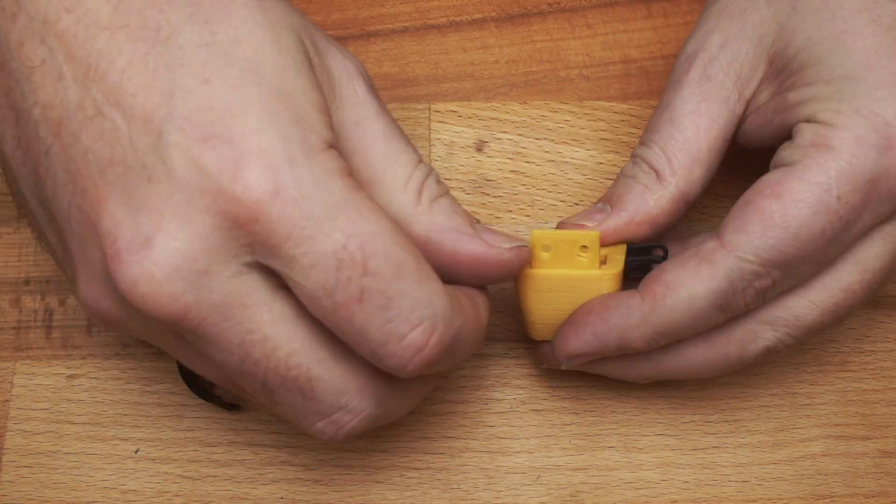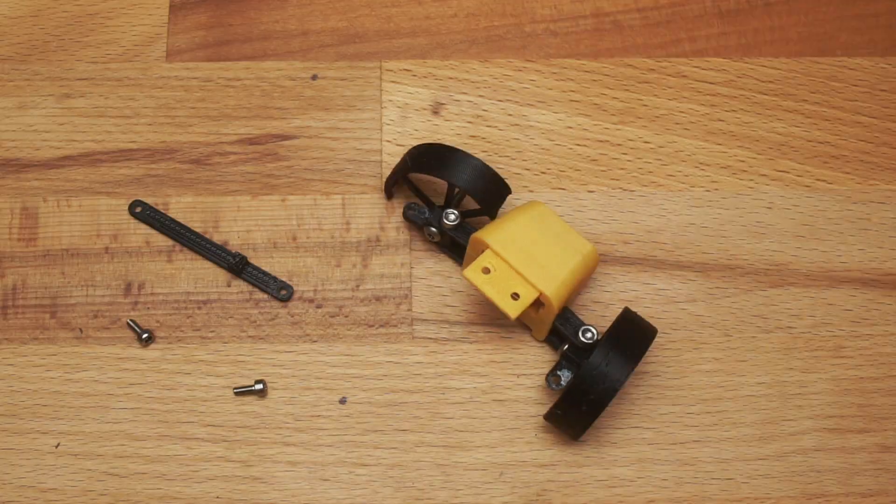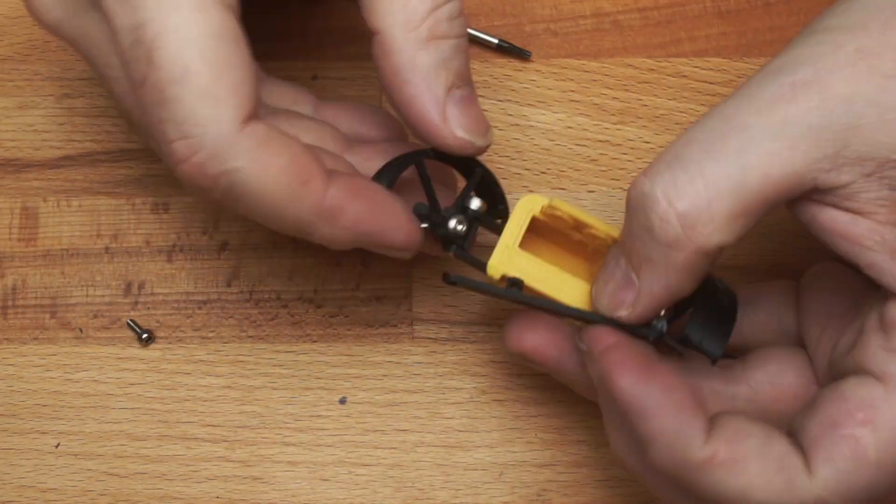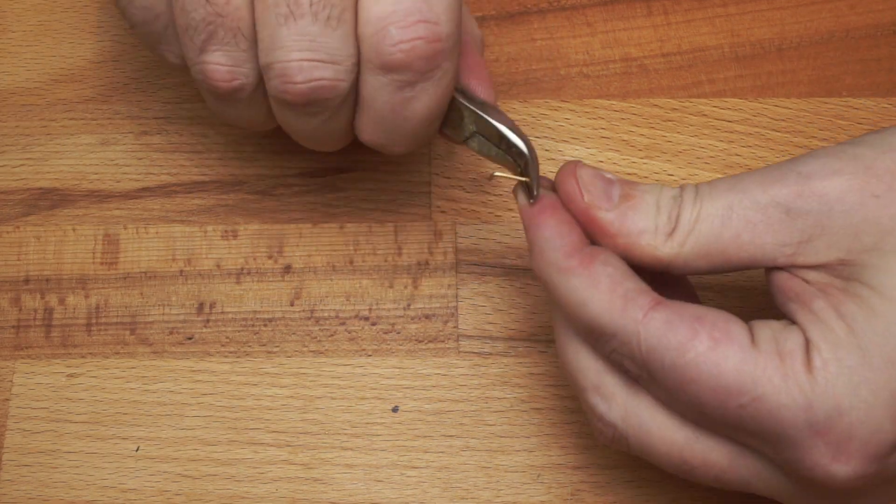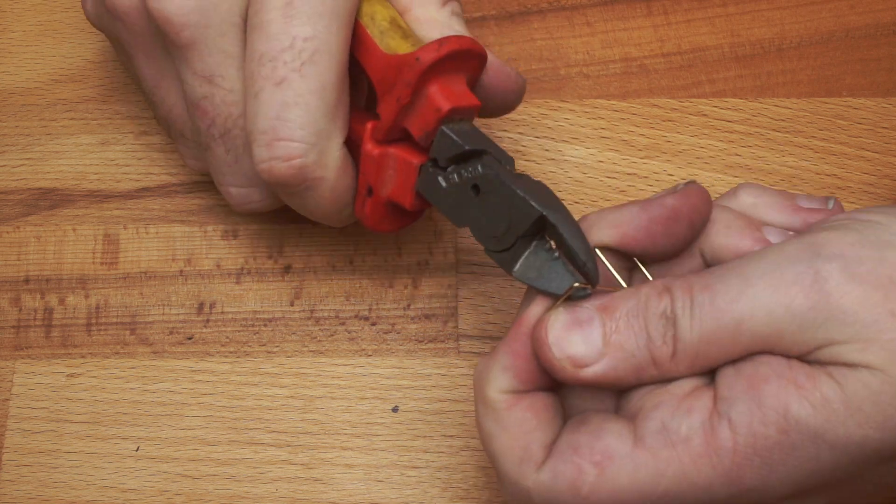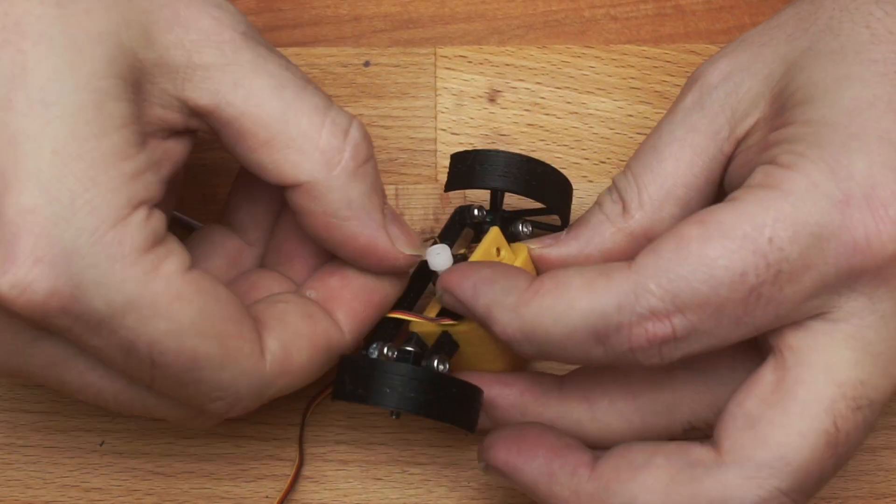We can then mount the steering arms to the wishbones using M2.5 screws and add the steering rod and push the servo into place. To link the servo and steering rod together we put a couple of bends in a paper clip that are 12 millimeters apart. We can now use the paper clip to join the horn and steering arm.